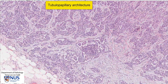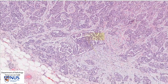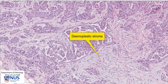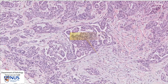We can also see that the surrounding stroma is very desmoplastic. It is cellular and there is this proliferation of plump spindle cells, which are the myofibroblasts in the stroma. There are also a few scattered inflammatory cells in the stroma.